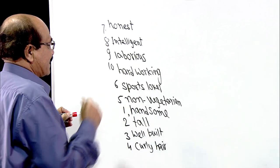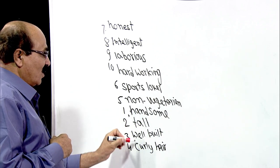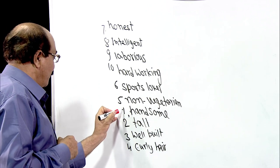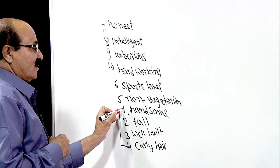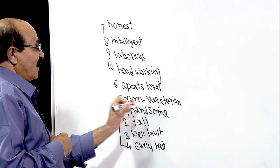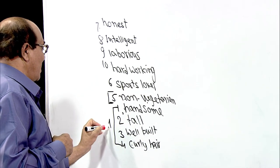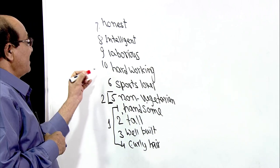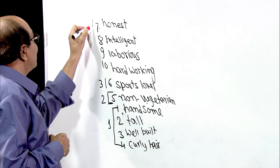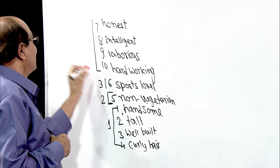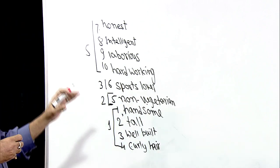The third stage will be grouping them together. The last four items are about the physical traits of the character, so they will go together. The fifth one is about habits, so it will be grouped here. Then hobbies, and then other traits. This is what we mean by grouping together the ideas.